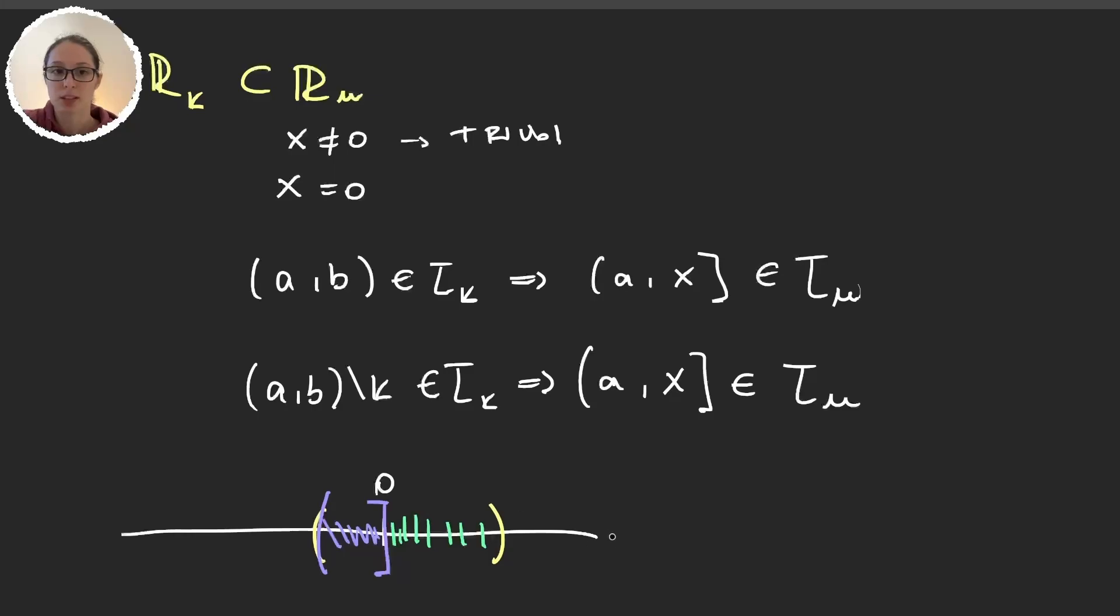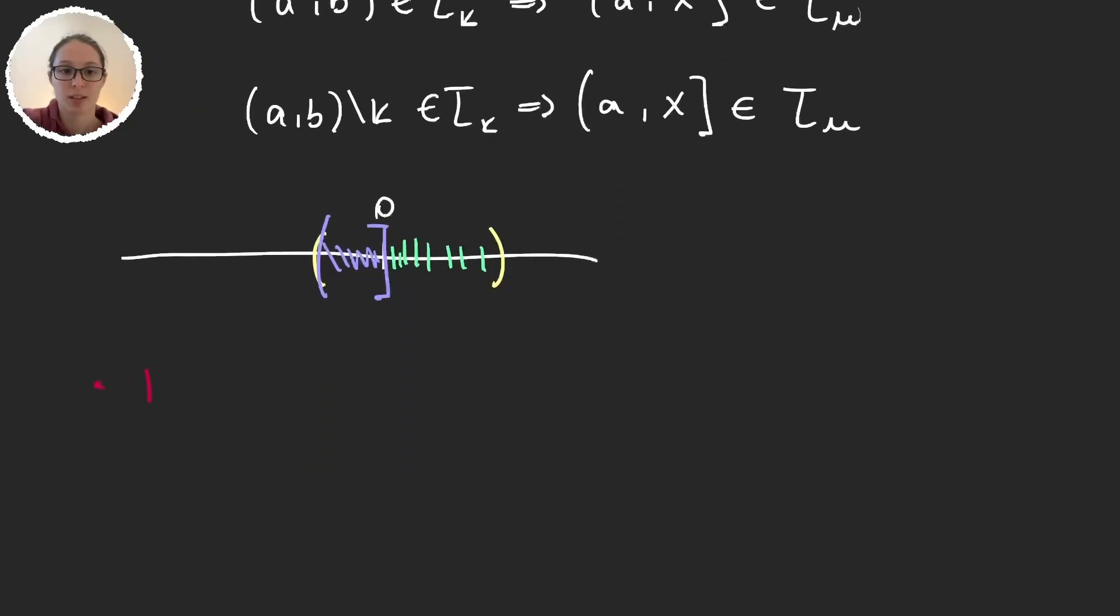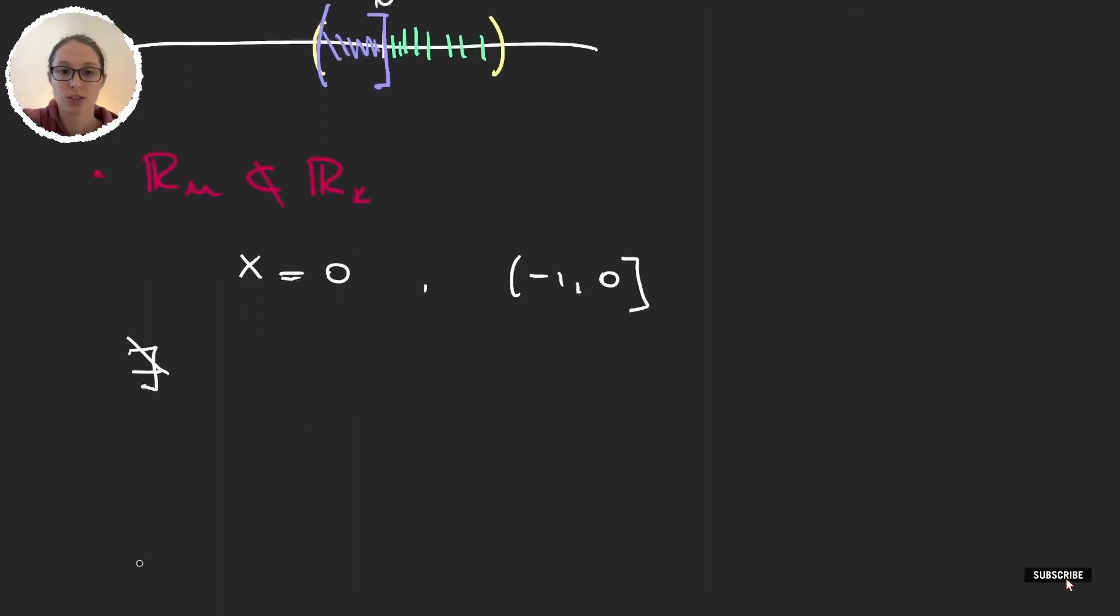Now let's see that the inclusion upper limit in R_K is not valid. If I take x equals zero and my basis element in the upper limit topology to be [-1,0], then there obviously does not exist an element of the form (a,b) or (a,b)\K such that zero is contained in (a,b).